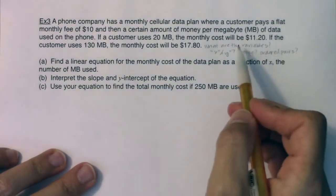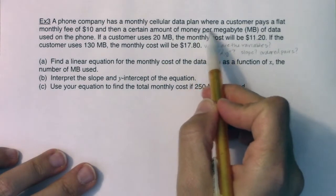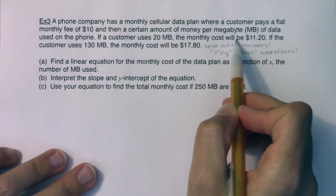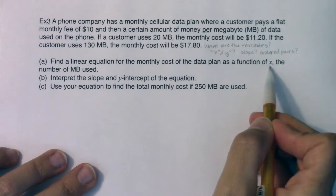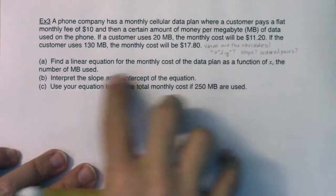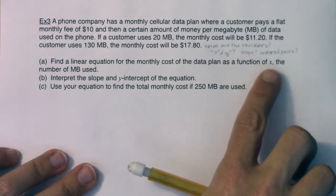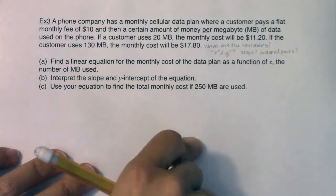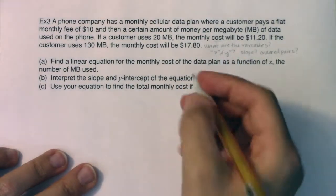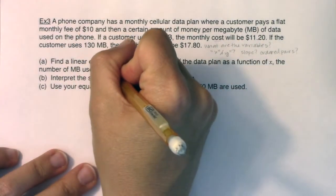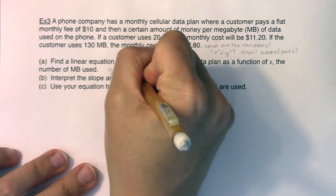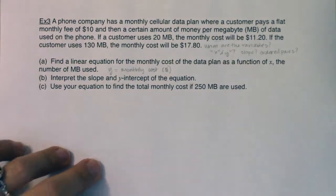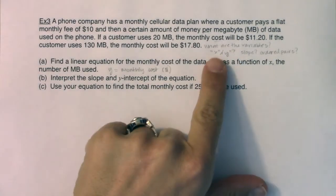As I'm going through this, in terms of the variables, it looks like we have the amount of data you're using, the number of megabytes used, and then how much it will cost you. They tell you right here what X is - X is the number of megabytes used. So not only do they tell you your X variable, they're also calling it X. And I see this part that says find the y-intercept, so they're telling me to use the letter Y also. The only other variable in here is the monthly cost. So X is the number of megabytes used, and Y is the monthly cost for this cell phone, and the units on this one are dollars. Those are my variables.